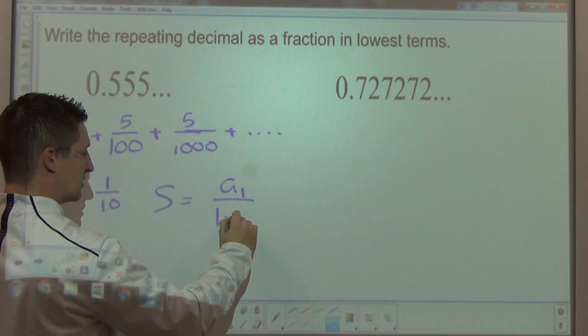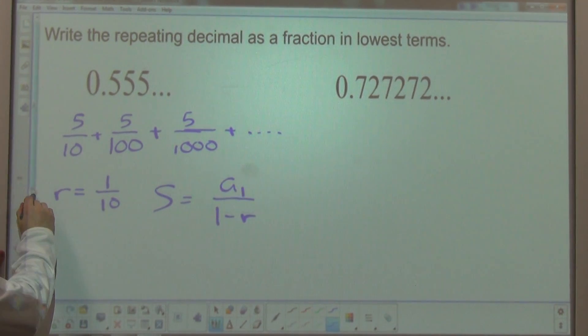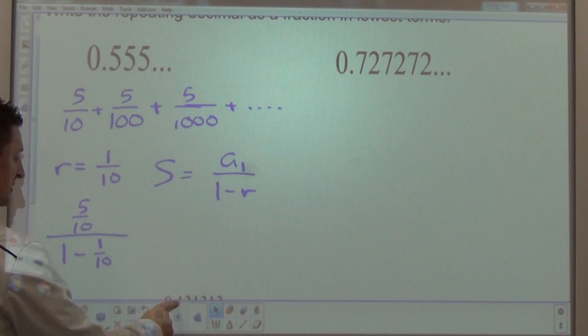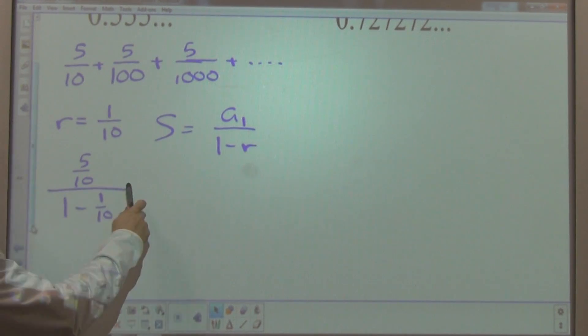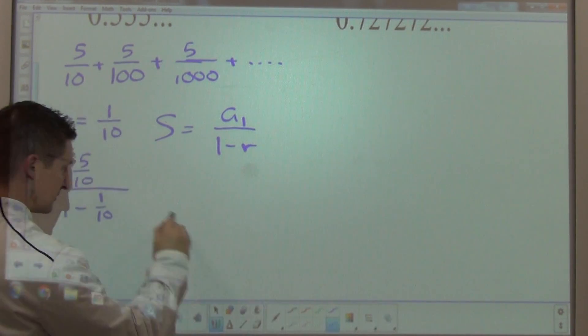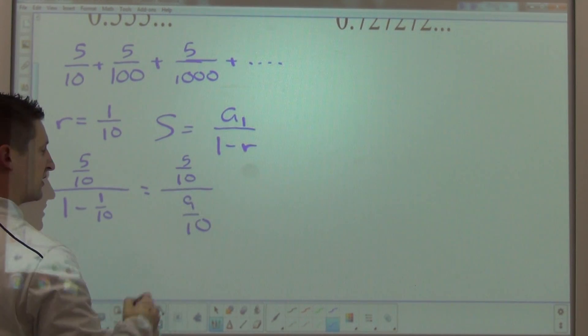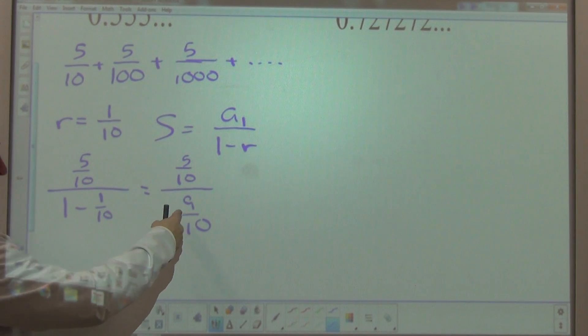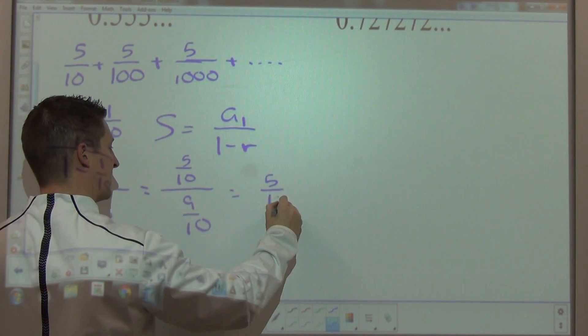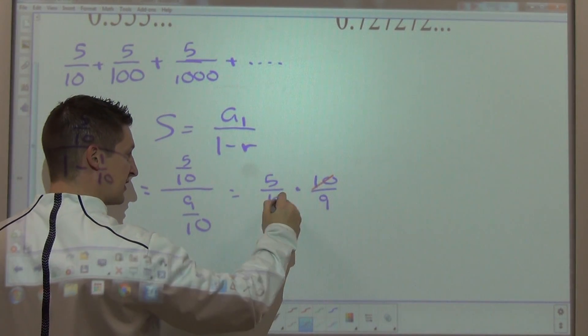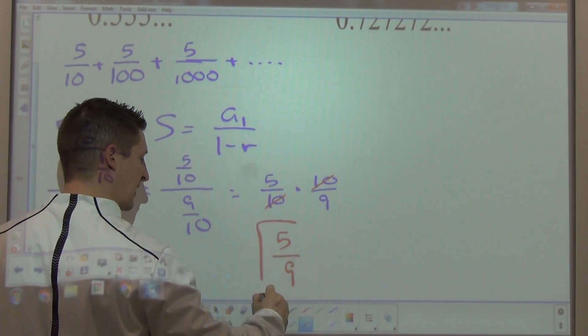So if I take the first term, 5 tenths, divided by one minus the ratio, that ratio being one-tenth. I am going to have one minus one-tenth, which is nine-tenths, five-tenths in the numerator. Dividing by a fraction means we multiply by reciprocals. This is going to be the same as taking five-tenths times ten-ninths. I notice the tens will cancel out. My final answer will be five-ninths.